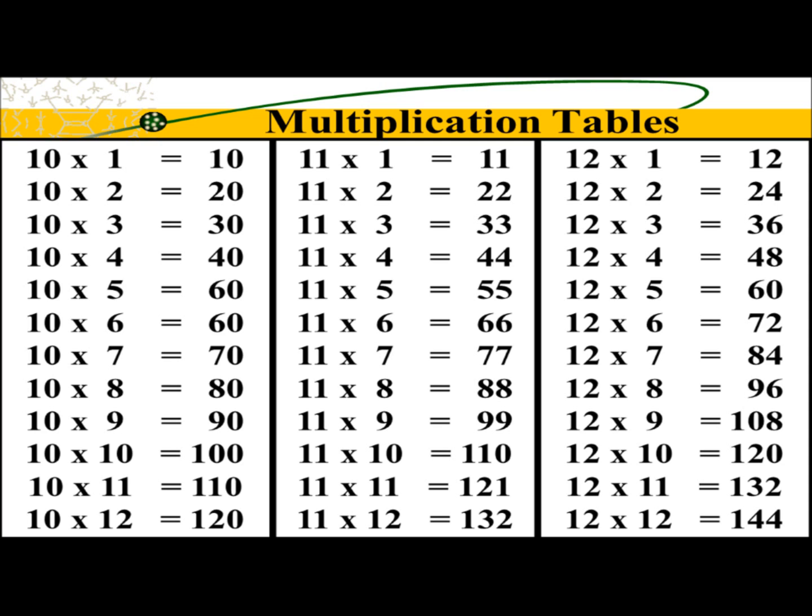10 times 5 is 50. 10 times 6 is 60. 10 times 7 is 70. 10 times 8 is 80. 10, 20, 30, 40, 50, 60, 70, 80, 90, 100, 110, 120.